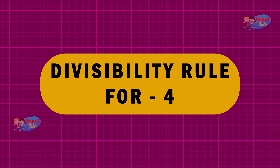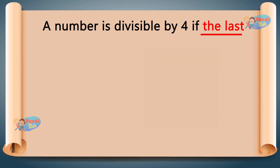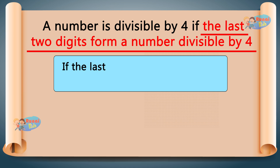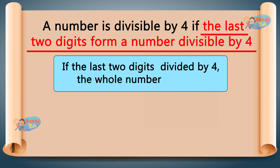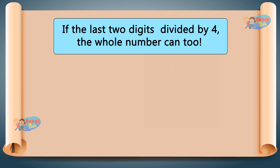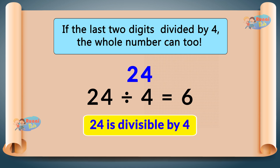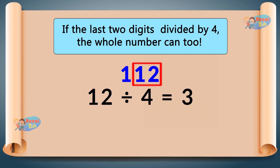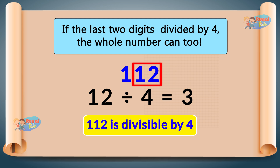Divisibility Rule for 4: A number is divisible by 4 if the last two digits form a number divisible by 4. Look at the last two digits — if that number can be divided by 4, the whole number can too. 24 — since 24 divided by 4 equals 6, 24 is divisible by 4. 112 — last two digits are 12. Since 12 divided by 4 equals 3, 112 is divisible by 4.